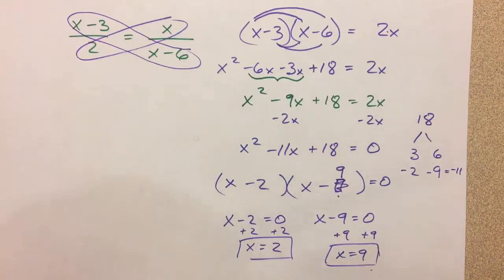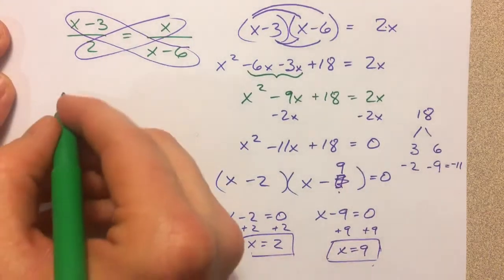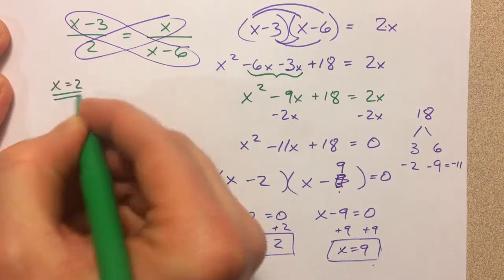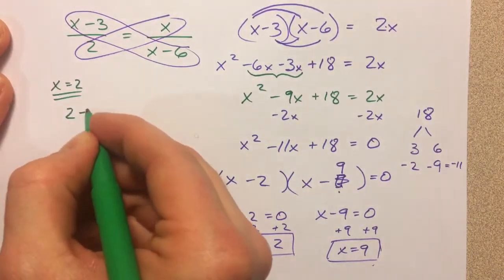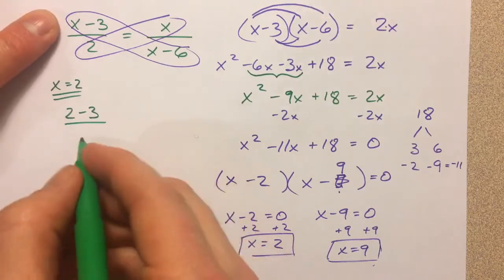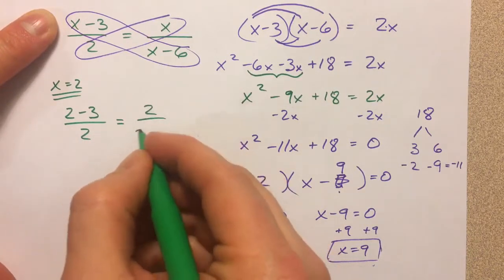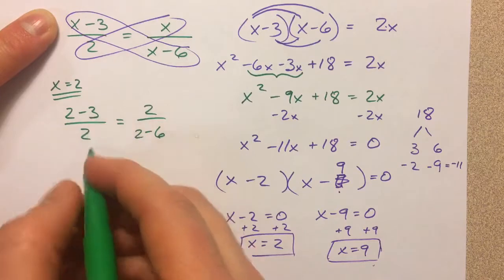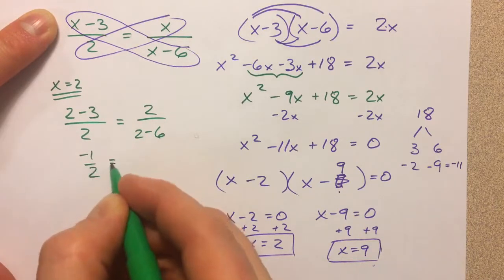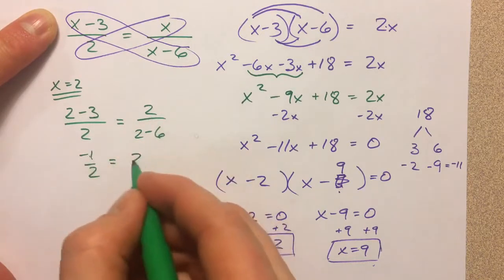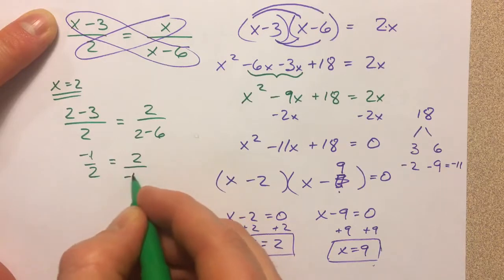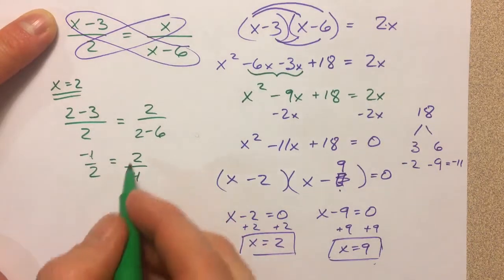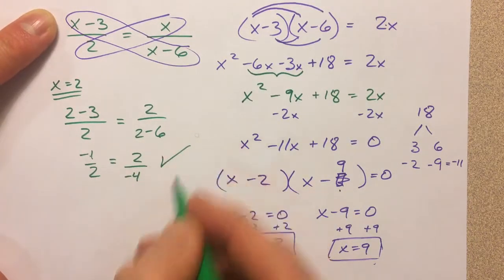Both of these are solutions, and you can plug them back in to make sure that they work. So I'm going to plug in for x equals 2 and see if it works. x equals 2 minus 3 divided by 2 is the same as 2 divided by 2 minus 6. So that's negative 1 divided by 2, 2 minus 3, and then 2 minus 6 is negative 4. Negative 1 divided by 2 is the same thing as 2 divided by negative 4, so that works out.